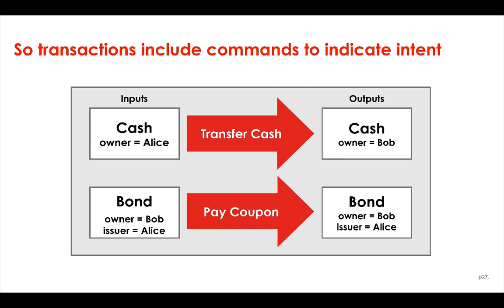To clarify the intent of a transaction, we add one or more commands. These commands tell us what ledger updates the transaction represents. For example, in this transaction that we see here, the commands indicate that we are transferring cash from one party to another, and that we're doing this because we're paying a coupon on a bond. So we now know that this represents a transaction transferring cash as a coupon payment on a bond.